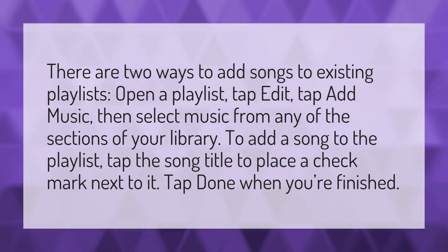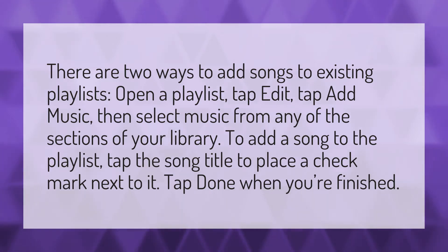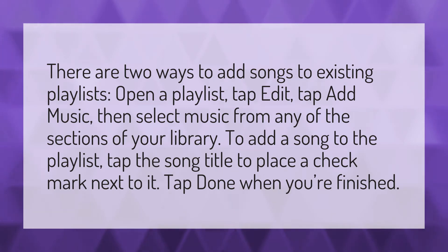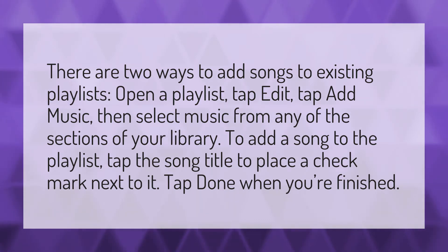There are two ways to add songs to existing playlists. Open a playlist, tap Edit, tap Add Music, then select music from any of the sections of your library. To add a song to the playlist, tap the song title to place a check mark next to it. Tap Done when you're finished.